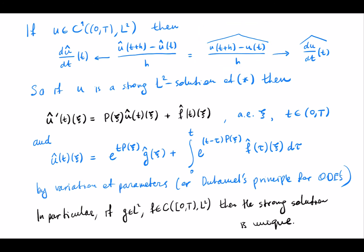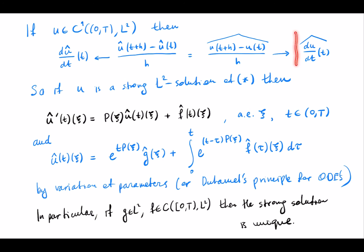That will go to the Fourier transform of the derivative, taking into account that the Fourier transform acts continuously between L^2 spaces. So the Fourier transform commutes with taking the time derivative in L^2, and this holds for any H^s space instead of L^2.